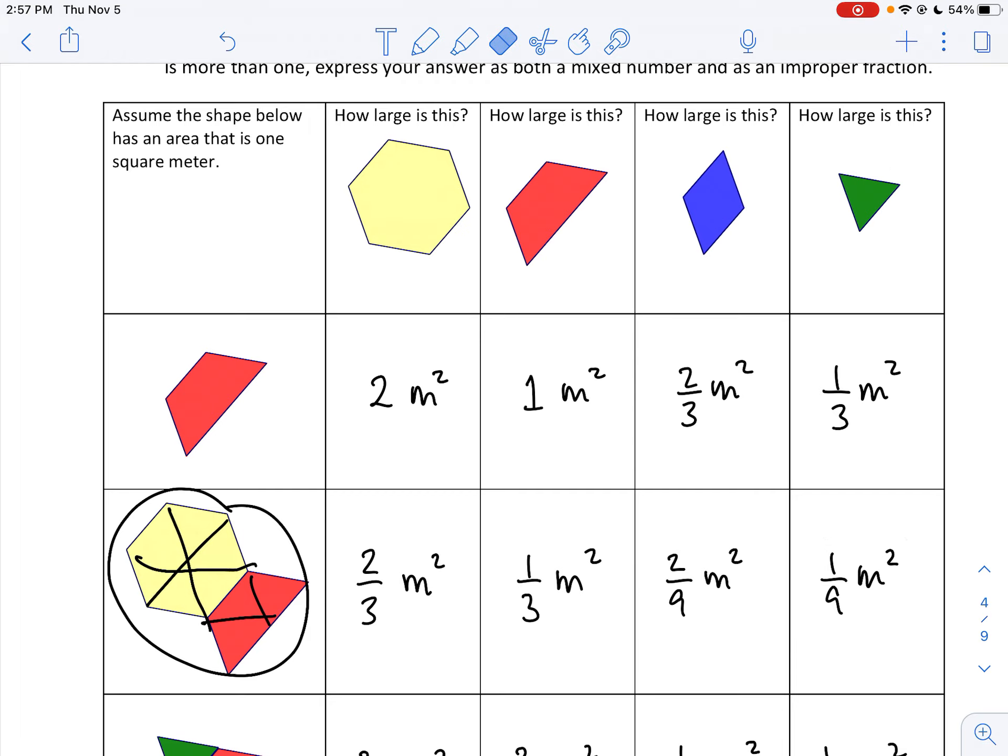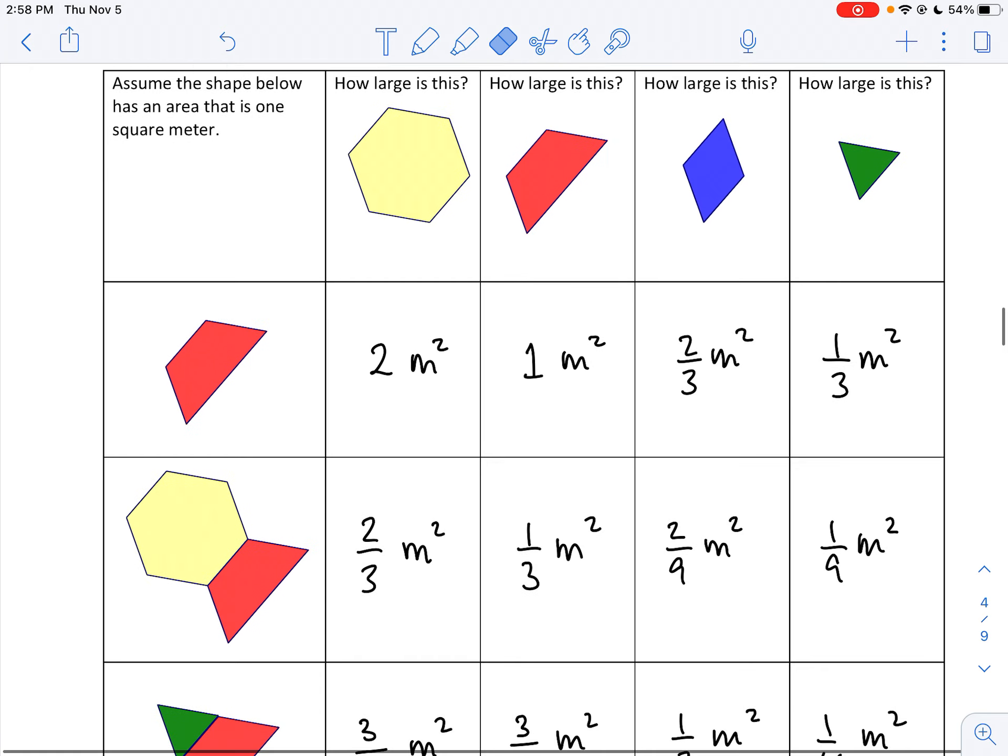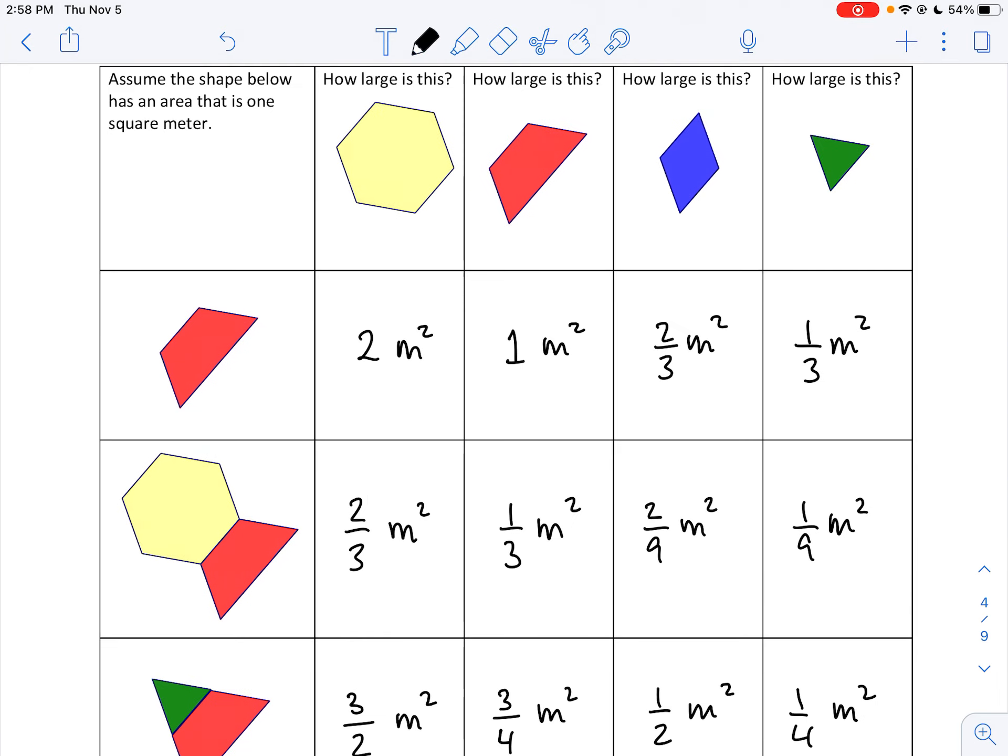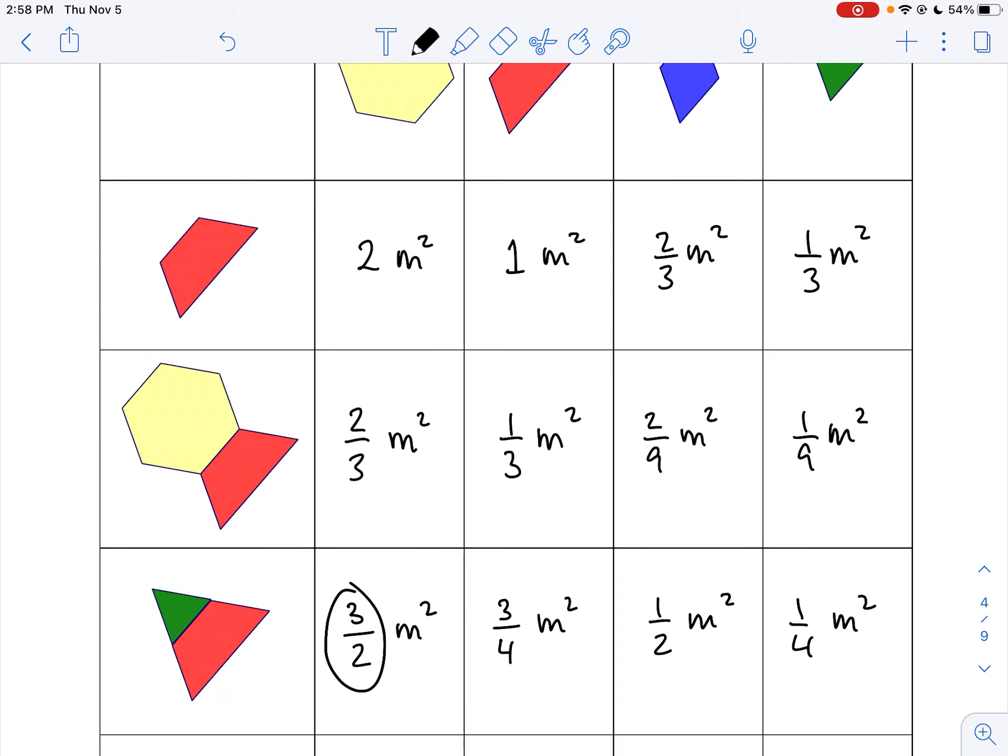Now a couple of things you should notice in your numbers here when all is said and done. Notice that to go from the yellow to the red, that the red is exactly one half of that. So whatever number you have here, you should have half that number here. Two-thirds and half of two-thirds is one-third. Of course at this point we haven't learned how to do fractions of fractions, multiply them, but I think all of you already know how to do that in the first place.